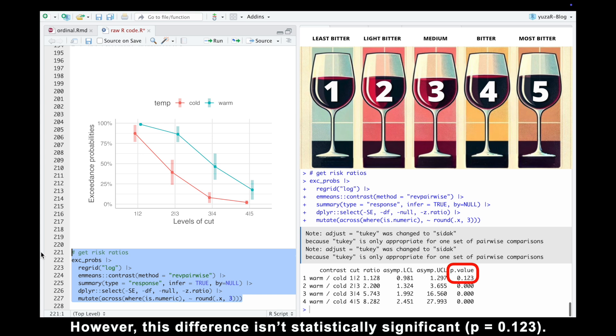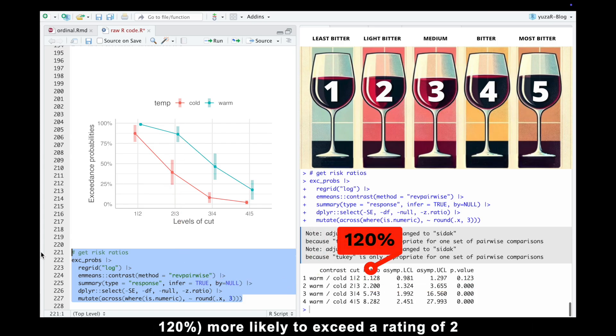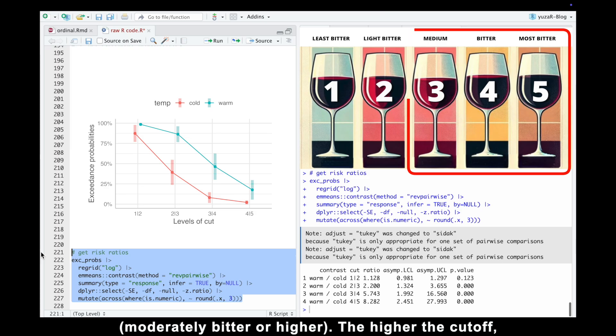However, this difference isn't statistically significant. In contrast, at the 2 to 3 threshold, warm wines are 2.2 times or 120% more likely to exceed a rating of 2, moderately bitter or higher.